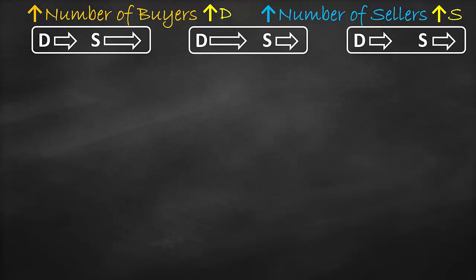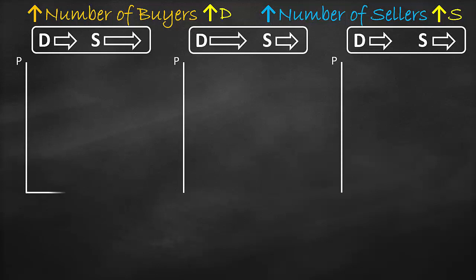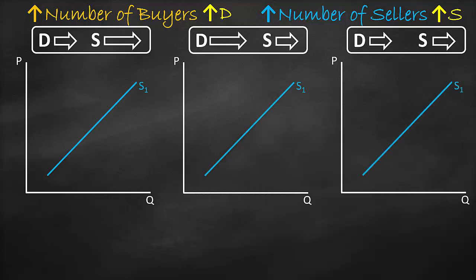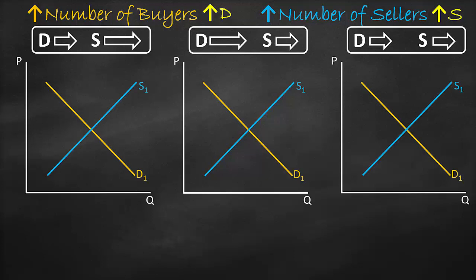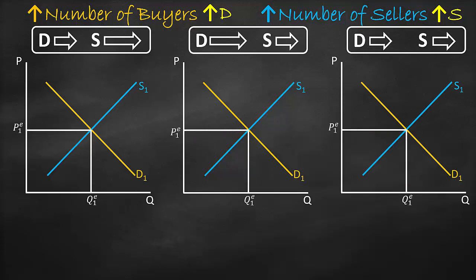We will draw three identical graphs. Draw the y-axis which is the price, and the x-axis which is the quantity. Draw the upward supply curve and label it S1, and draw the downward demand curve and label it D1. The point of intersection of S1 and D1 is the equilibrium point, which results in equilibrium price and equilibrium quantity Q1.